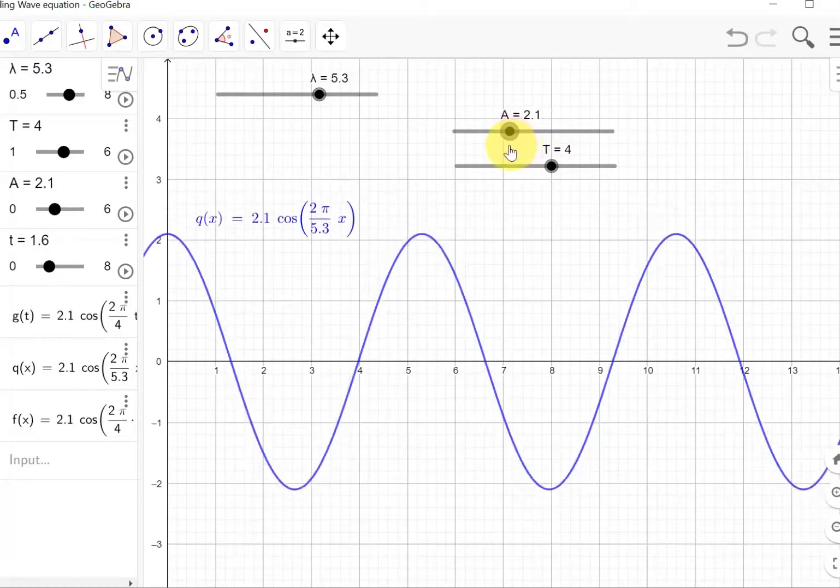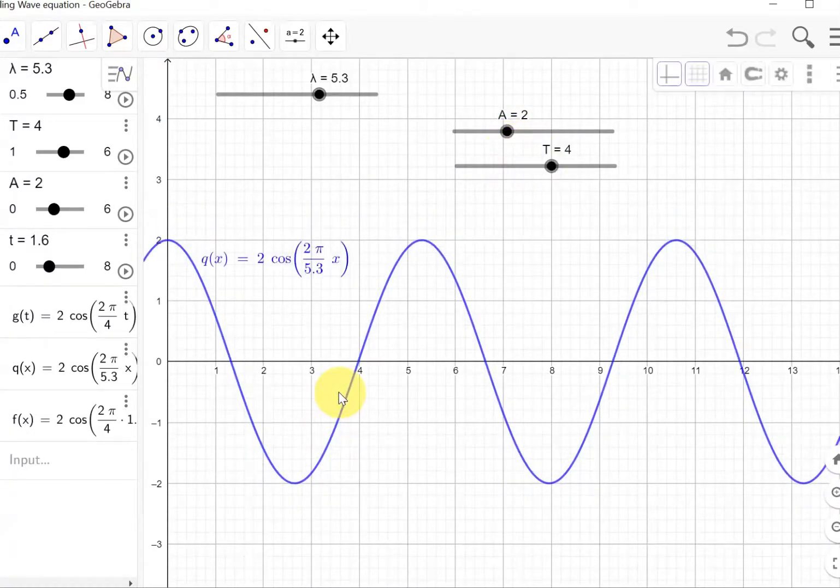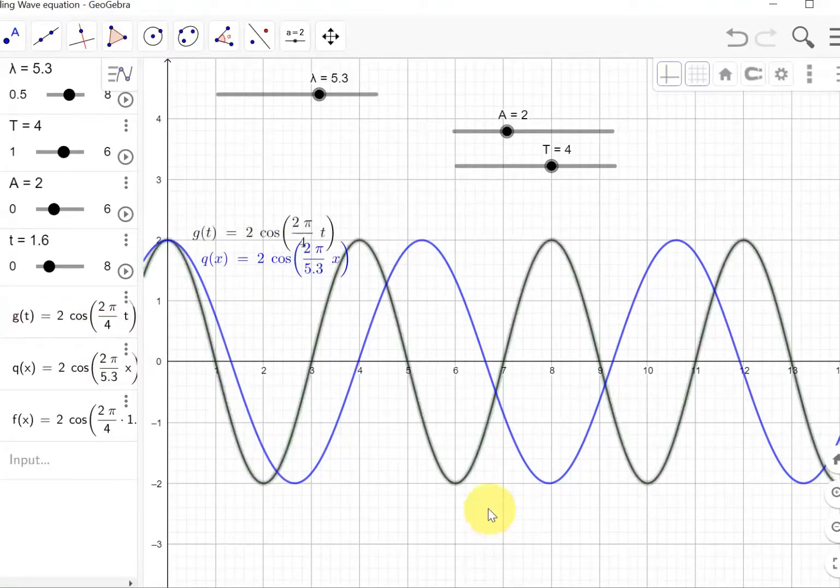This is just a snapshot at a particular time, and I'm assuming that time is zero. By the way, the amplitude of this wave can also be changed. Here's larger amplitude, smaller amplitude. Let's keep that at two. Now let's bring the time equation.